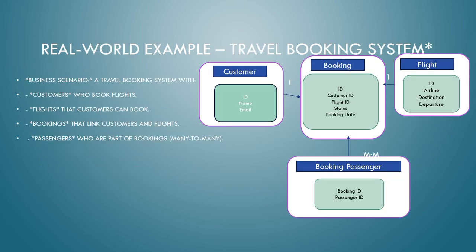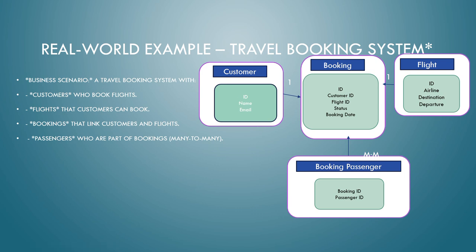For the real-time example I am going to use a travel booking system. I have chosen four tables: customer, booking, flight, and passengers. As a customer I want to book a flight from one place to another. For the customer, we need fields like name and email ID, plus a default ID. The same pattern applies for booking, flight, and passenger tables. Using a customer ID you can look up all the booking details.